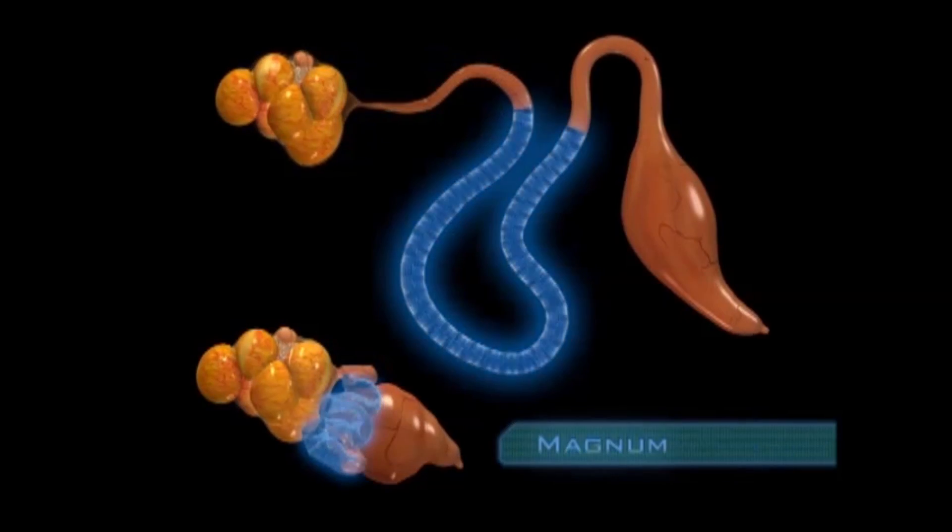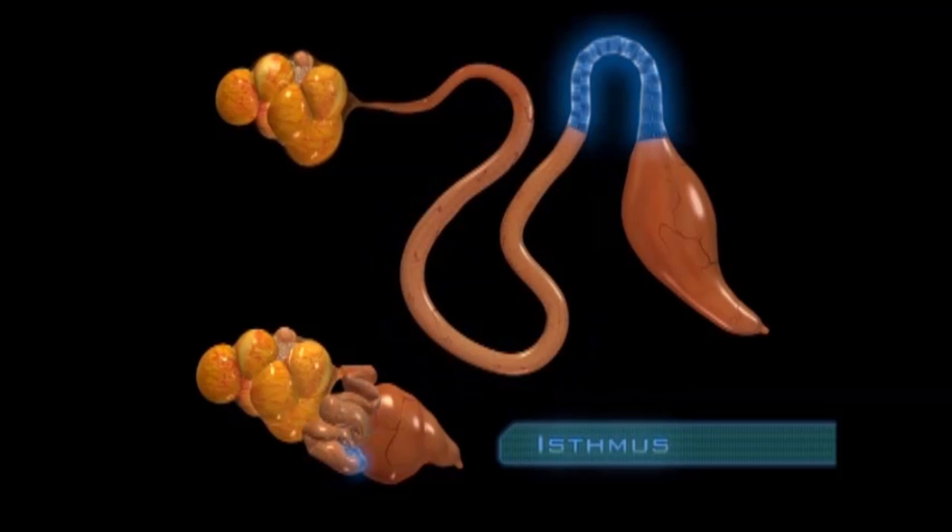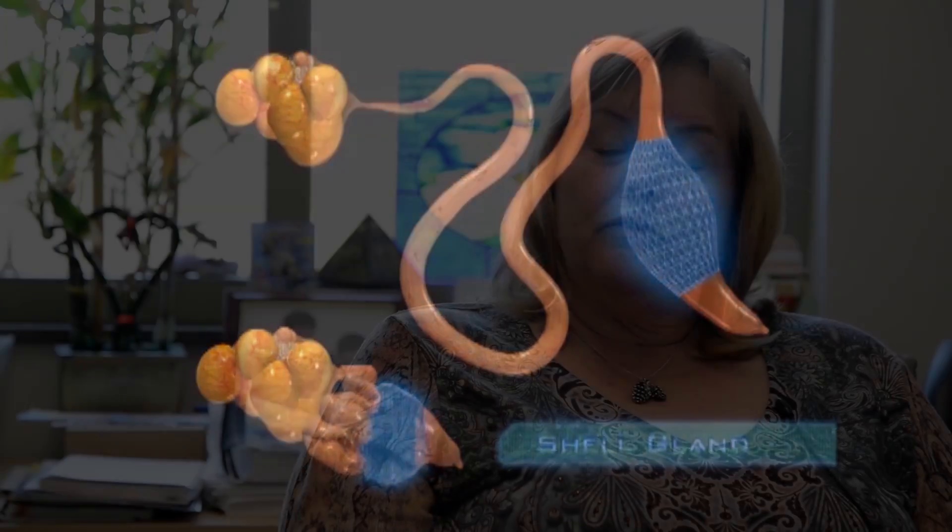The virtual chicken allows you to see inside an actual bird and see what goes on for that particular system that you're evaluating with the virtual chicken, whether it's the reproductive tract or the digestive tract.